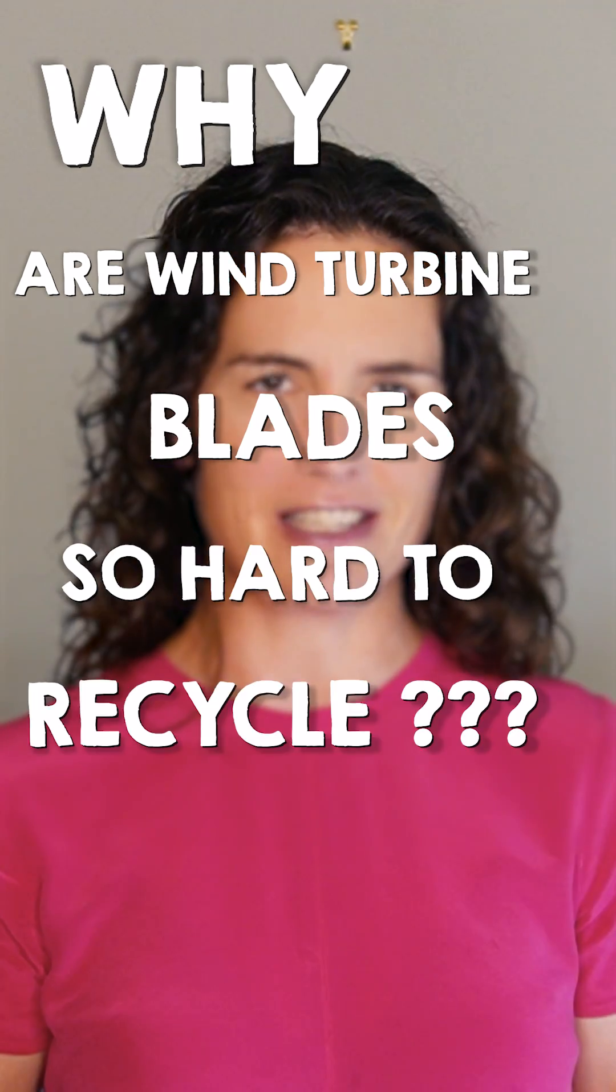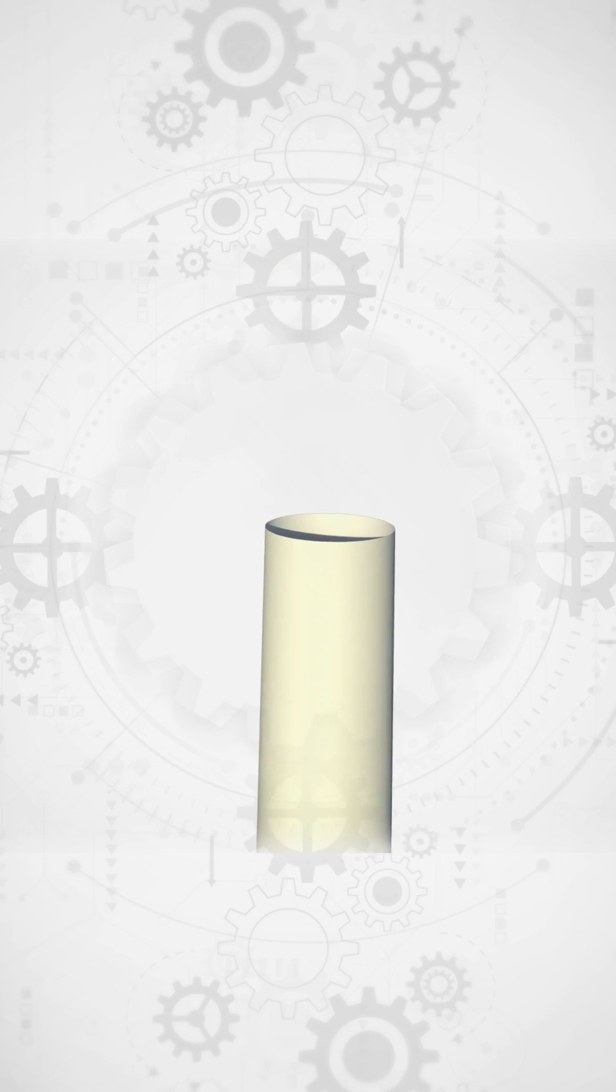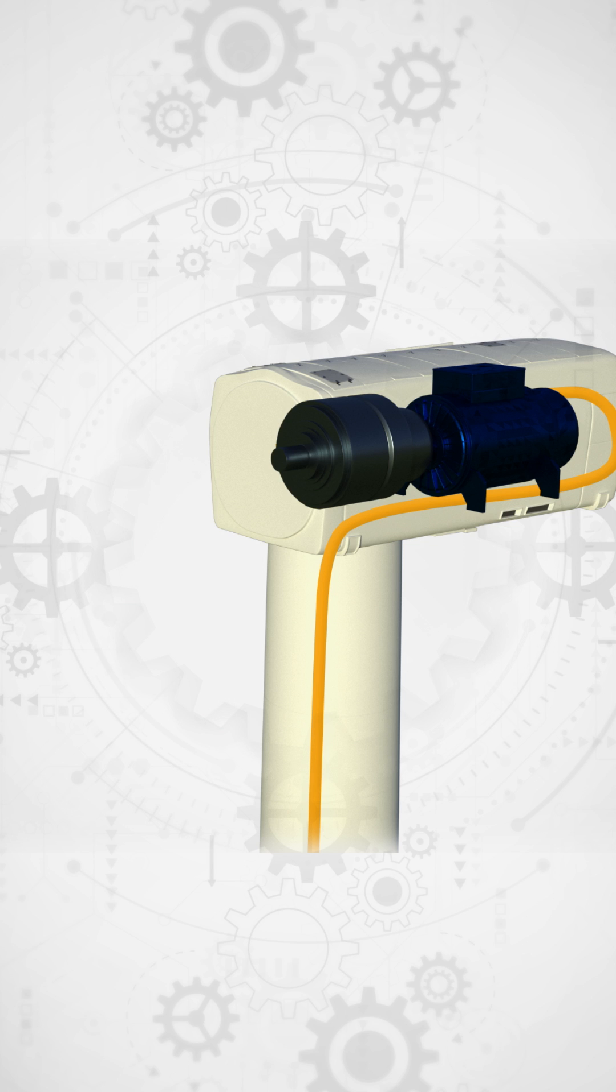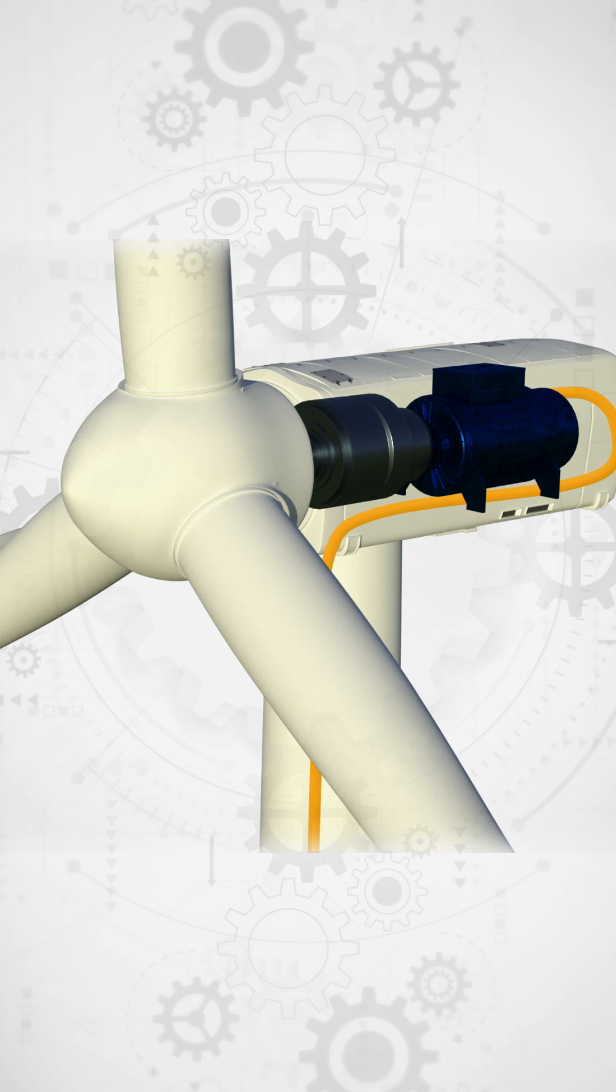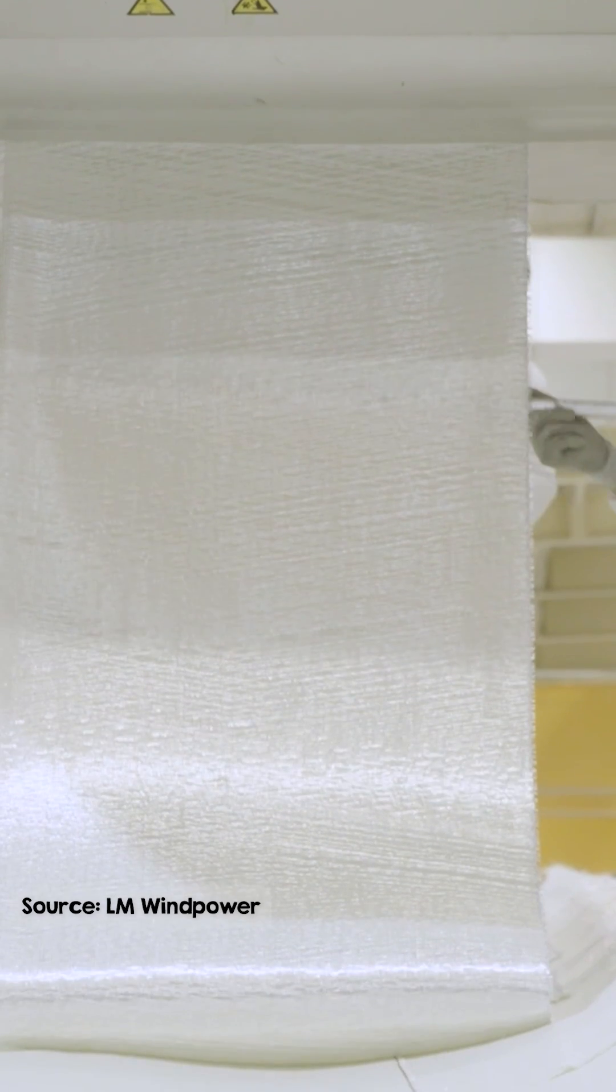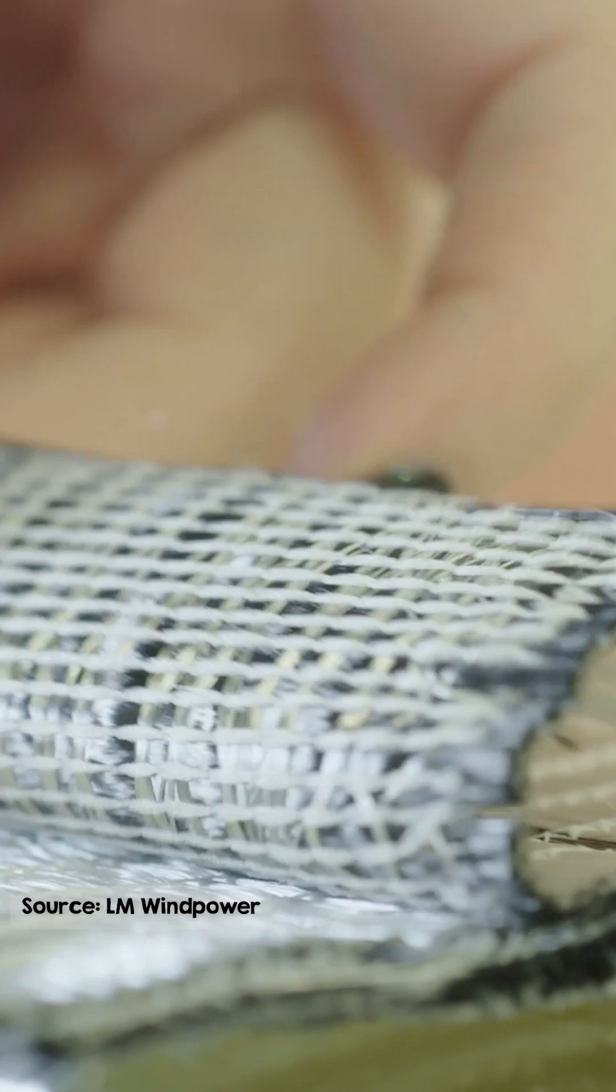Why are wind turbine blades so hard to recycle? Most parts of a wind turbine are made from steel, copper and concrete and they're recyclable. However, the blades made mostly of fiberglass and sometimes carbon fiber present a unique recycling challenge.